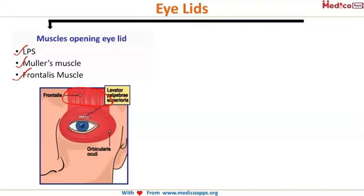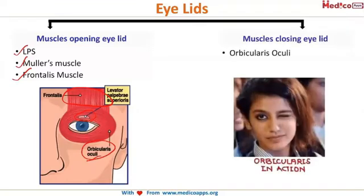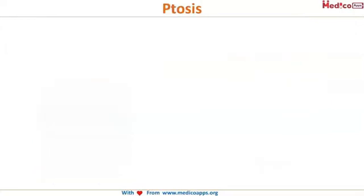That is the frontalis, this is the levator palpebrae superioris, and this is the orbicularis oculi. These three muscles act to open your eyelid, whereas only one muscle helps in closing the eyelid — that is the orbicularis oculi.